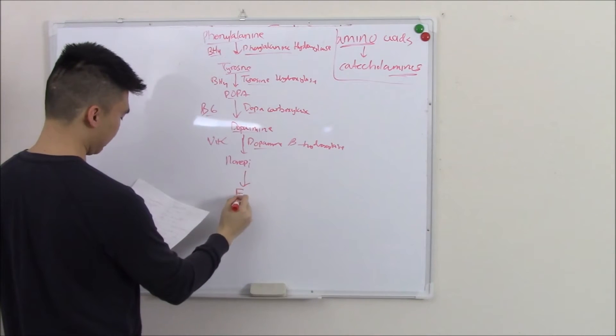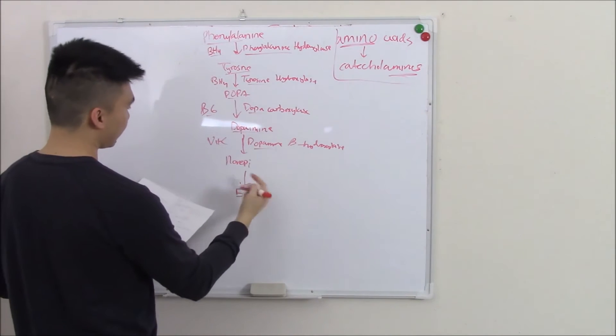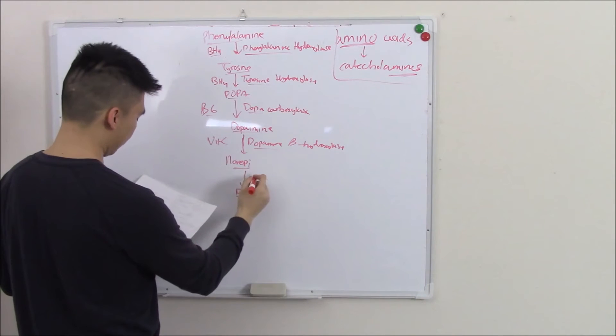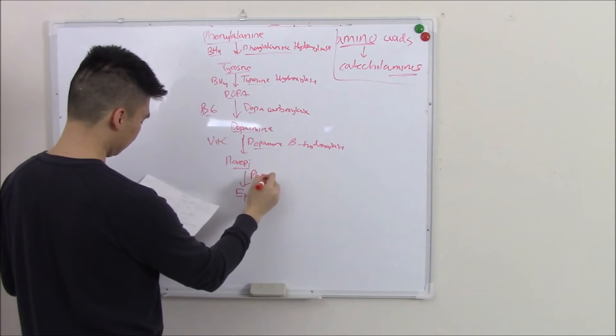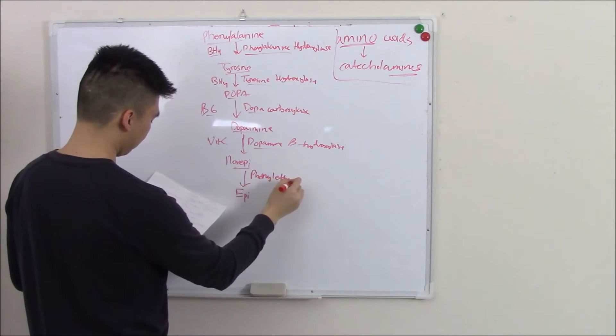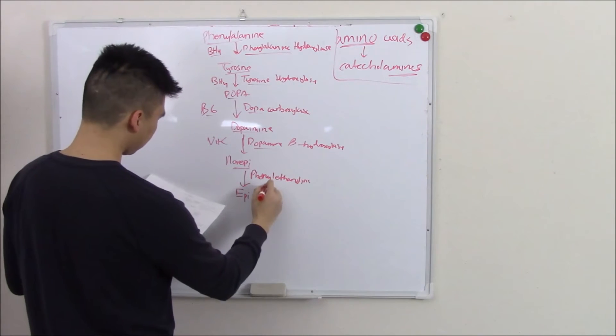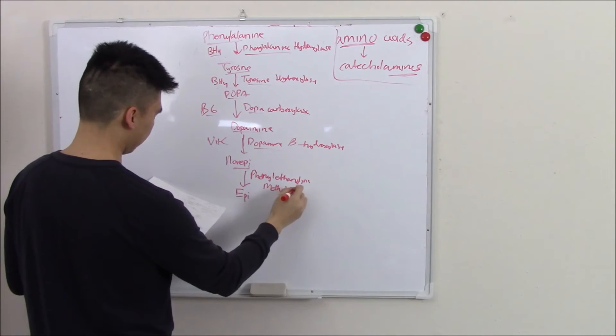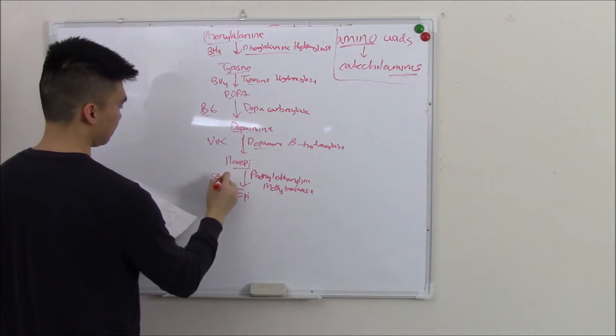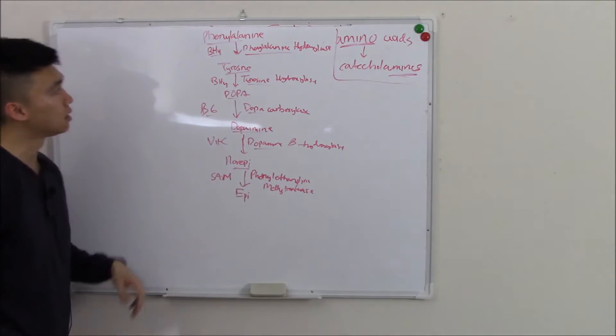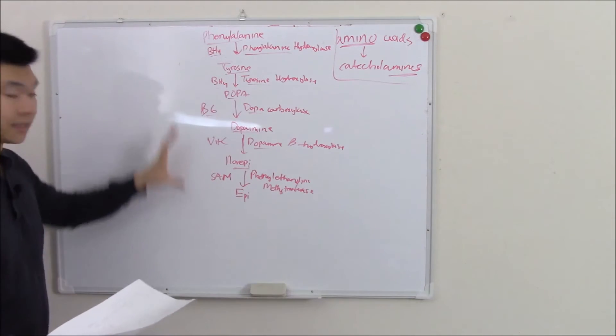Norepinephrine becomes epinephrine via an enzyme that's not named after norepinephrine, but phenylethanolamine N-methyltransferase via his friend SAM. So this is the basics.